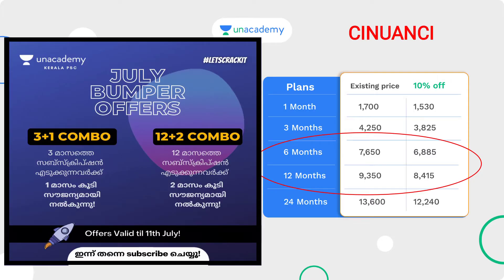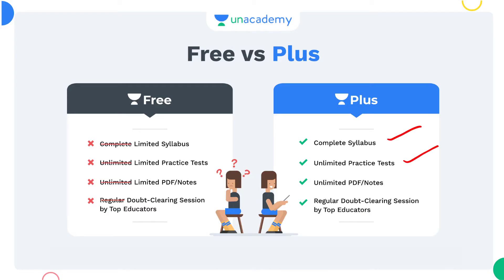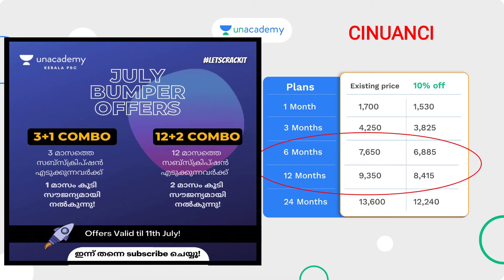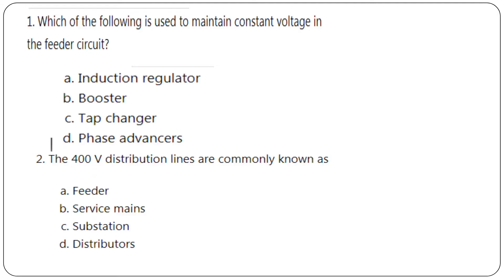Plus features include complete syllabus, unlimited PDF notes, unlimited practice tests, and regular doubt clearing sessions by top educators. The offer includes: 3 plus 1 for 3 months, 1 for 5 months, 12 plus 2 for 10 months. We have a 10% offer available. That's our academy.